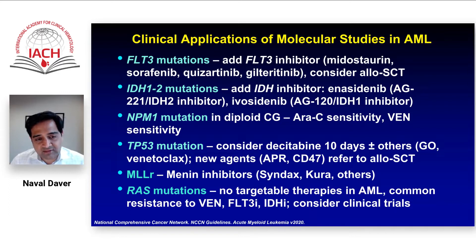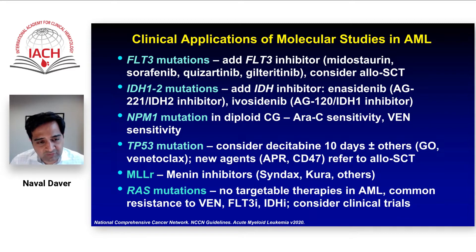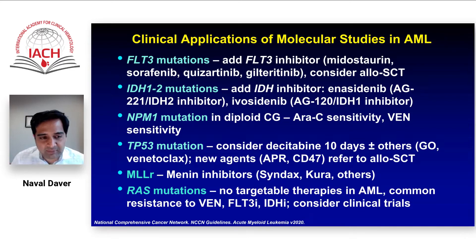RAS is another important mutation for which there are a lot of efforts to develop targeted therapies. Unfortunately, at this time, nothing yet has shown clear promise or benefit. But this is an important mutational group because we know that RAS plays a major role in driving resistance to both FLT3 mutations, IDH mutations, and venetoclax-based therapies. So it's kind of an important common resistance pathway that we have to find a way to tackle.